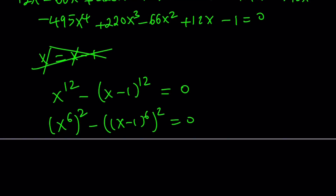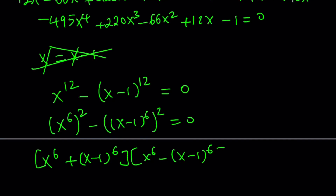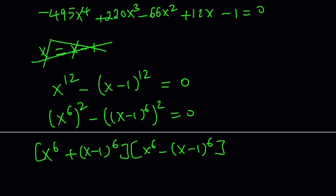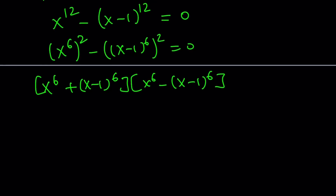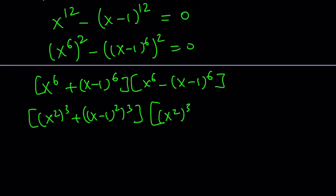That's definitely a difference of two squares, which can be written as (a + b)(a − b). These factors are also a sum of two cubes and a difference of two cubes, which we can factor further. We can write this as (x² cubed + (x−1)² cubed) — that's a sum of two cubes — and (x² cubed − (x−1)² cubed), a difference of two cubes. There are a lot of different ways to go about it, but this allows you to factor the whole thing pretty well.